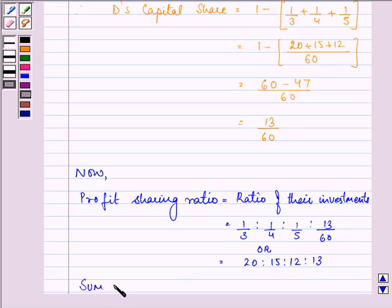So, the sum of ratios comes out to be 20 plus 15 plus 12 plus 13 and that is equal to 60.